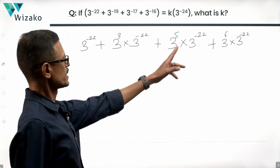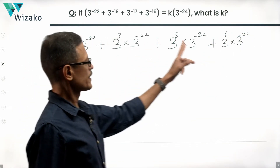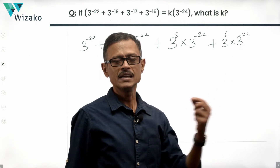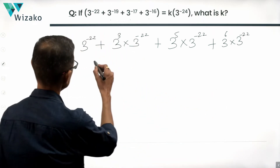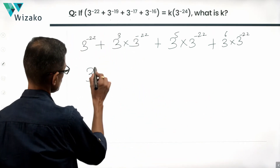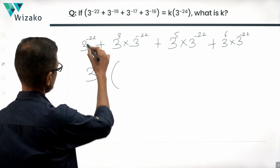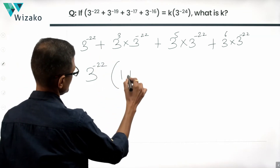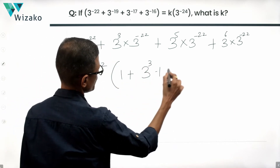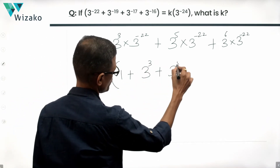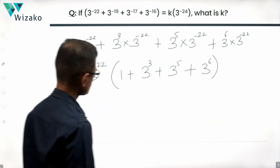So four terms are written. In all of these terms, by virtue of expressing it this way, we can take 3 raised to the power of minus 22 common outside. So we'll have 3 raised to the power of minus 22 multiplied by the quantity 1 plus 3 cubed plus 3 raised to the power of 5 plus 3 raised to the power of 6.